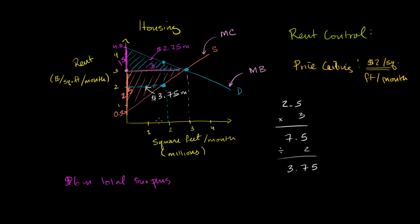For the consumers who are lucky enough to rent at this price, their consumer surplus actually increases for those 2 million square feet. However, producer surplus unambiguously shrinks. And the total surplus is now smaller than under an unfettered market — we can no longer access part of the potential surplus. That missing area represents lost benefit to society — benefit above cost — and we call this dead weight loss.